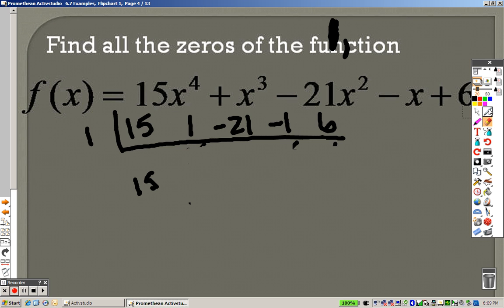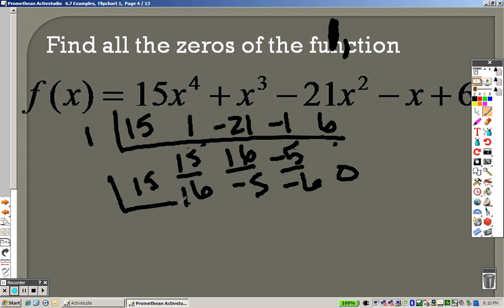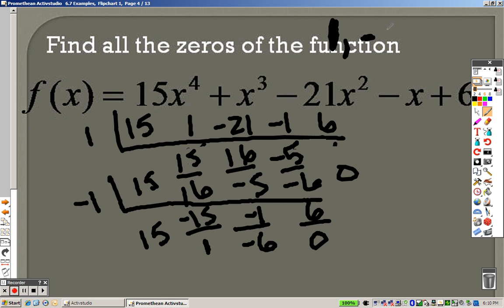Okay, 1 worked. So let me go back through here quick. I have 15, so that was 16, that's negative 5, that's negative 5, which is negative 6 and 0. So now I can work with these right here. 15, 16, negative 5, negative 6. So now let's try out a negative 1. So I bring a 15 down. 15 times negative 1 is negative 15. I add these two, 16 plus negative 15 is 1. 1 times negative 1 is negative 1. I add them to get negative 6. Negative 6 times negative 1 is positive 6. Add those together to get 0 as well, so I know that negative 1 also works.